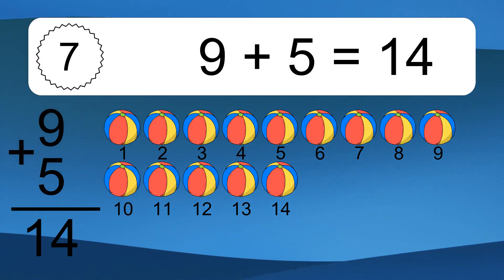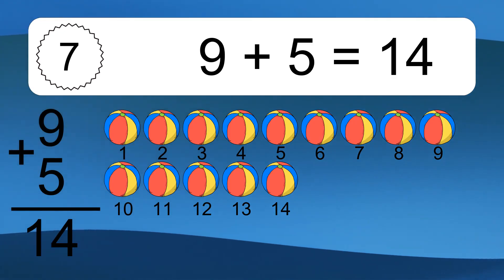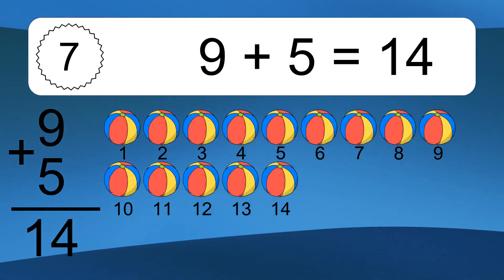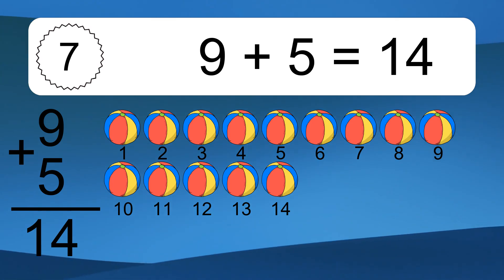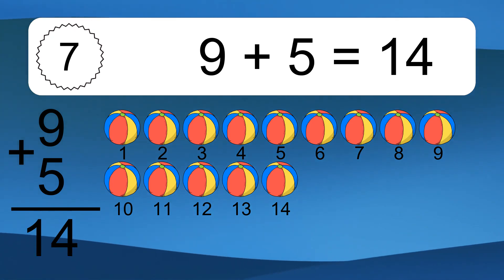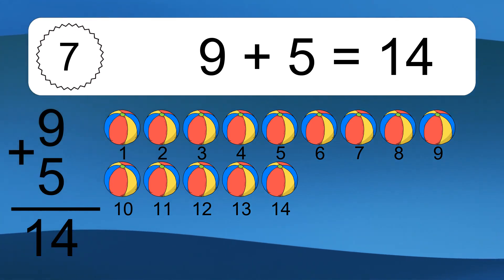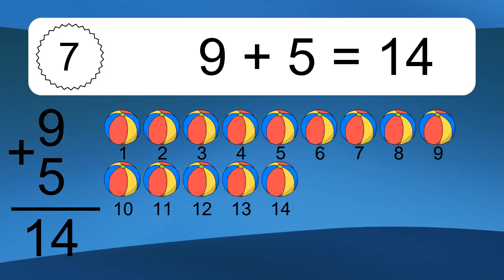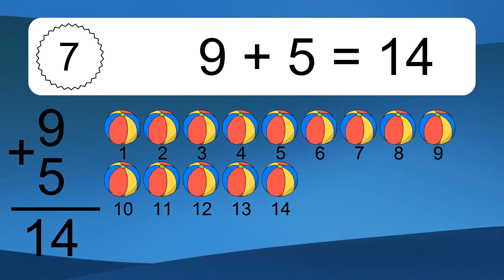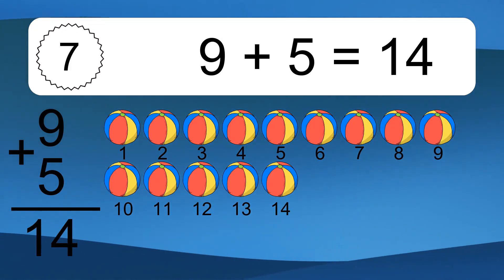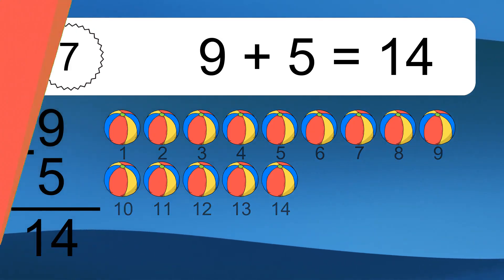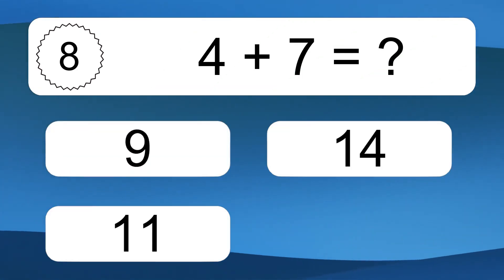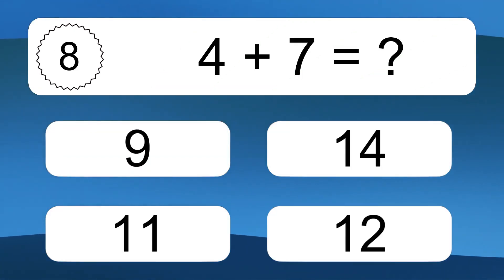13, 14, 15, 16, 17. 4 plus 7 equals what?